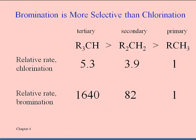This last slide summarizes what we've just seen for chlorination of an alkane. If you do this with bromination there's even more preference. These are comparing the relative rates of making a tertiary halogen compound versus a secondary one versus primary, and in each case the primary one is made in the least amounts.